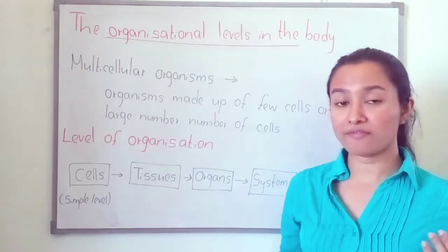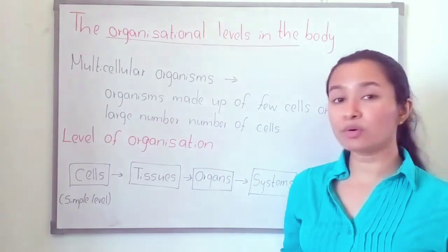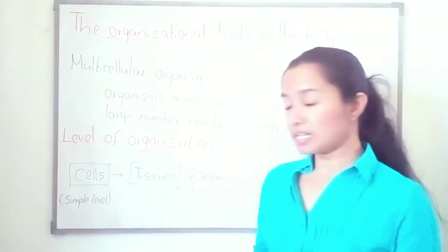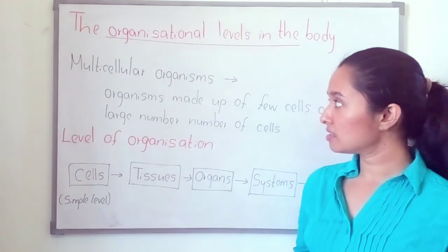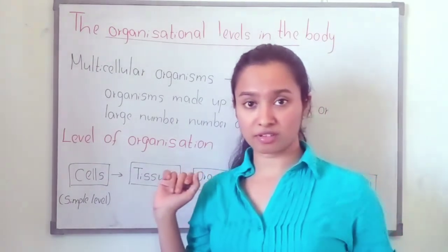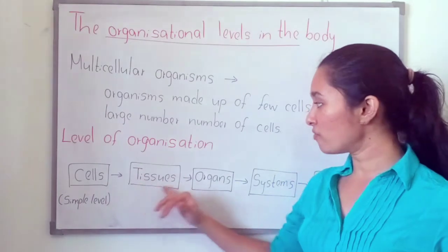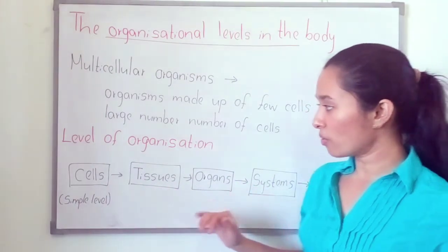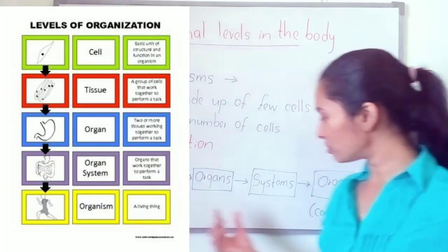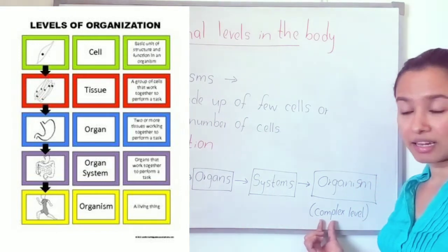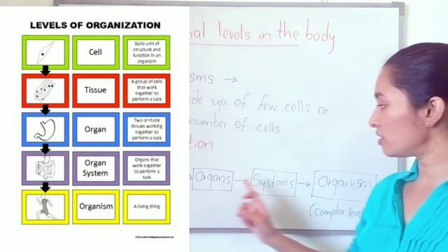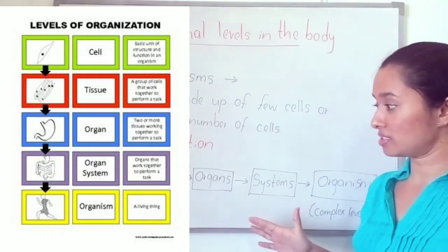These multicellular organisms show levels of organization. These are the levels of organization — from simple level to complex level. There are five levels: one, two, three, four, five. Five levels. Cell is the simplest level of organization.